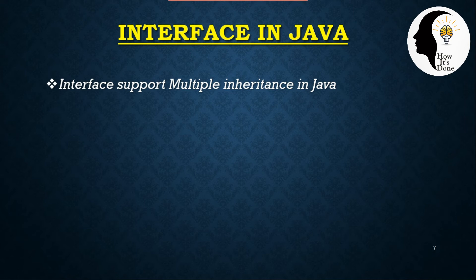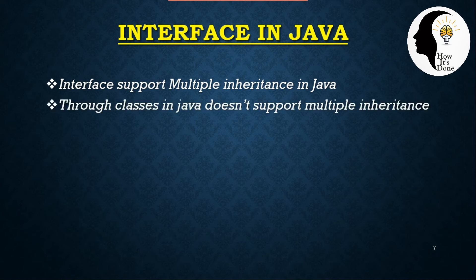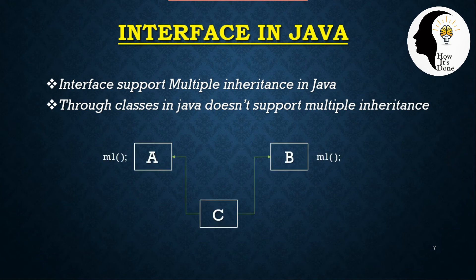Interface supports multiple inheritance in Java. We can also use multiple inheritance in Java. When Java uses multiple inheritance, we can have classes A and B as two parent classes, and class C as the child.